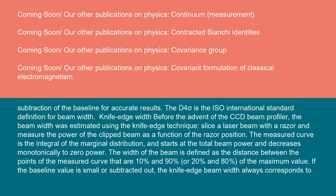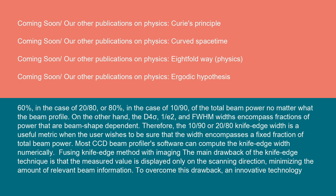Knife edge width: Before the advent of the CCD beam profiler, the beam width was estimated using the knife edge technique. Slice a laser beam with a razor and measure the power of the clipped beam as a function of the razor position. The measured curve is the integral of the marginal distribution and starts at the total beam power and decreases monotonically to zero power. The width of the beam is defined as the distance between the points of the measured curve that are 10% and 90% or 20% and 80% of the maximum value.